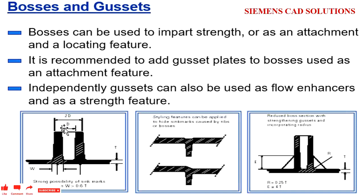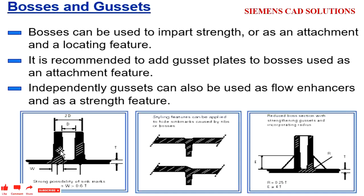This width should be 0.6 of the nominal thickness. Nominal thickness is nothing but the part thickness. We also need to provide a minimum 0.5-degree draft on the edges.